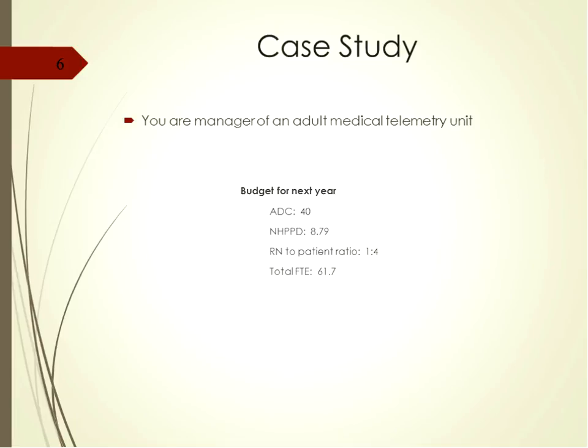Our case study is that you are a manager of an adult medical telemetry unit. Your budget for next year is an average daily census of 40, nursing hours per patient day of 8.79, RN to patient ratio of 1 to 4, and total FTE of 61.7.